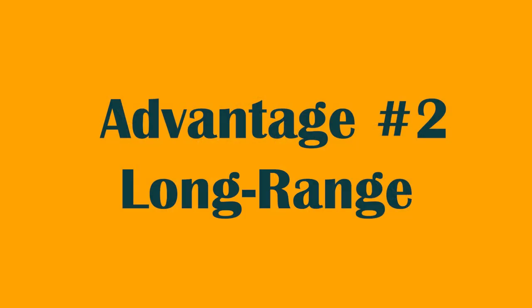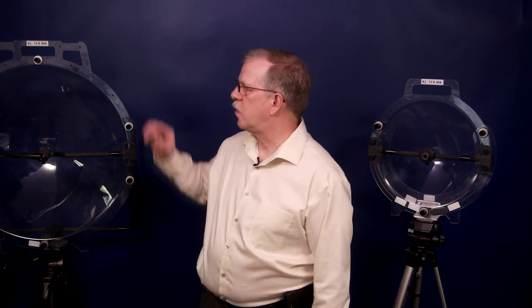The second advantage of parabolic microphones is the range they can provide. The amplification provided by the parabolic collector creates a microphone that can capture audio from great distances. So what sort of range or distance are we talking about? The 26 inch Clover Mike 26 can capture a normal human conversation from up to five or six hundred feet away in a quiet environment.